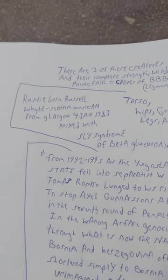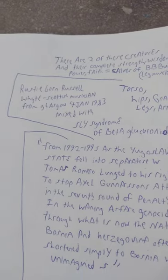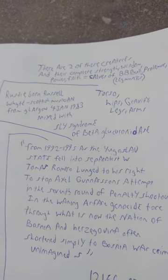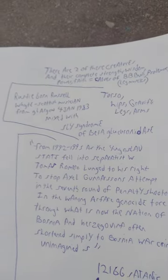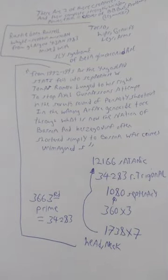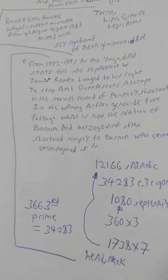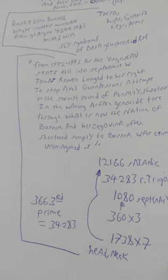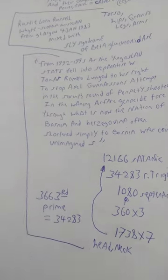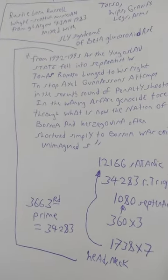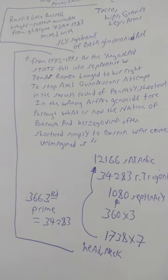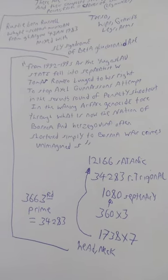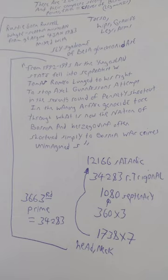And then the head and the neck. From 1992 to 1995, as the Yugoslav state fell into separatist, Thomas Romero lunged to his right to stop Axel Gunnarsson's attempt in the seventh round of penalty shootout.